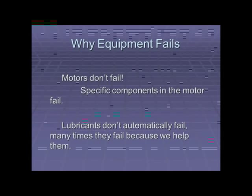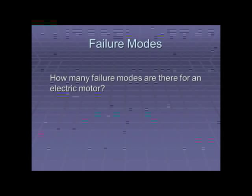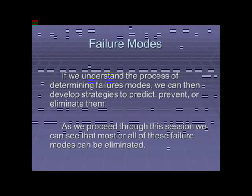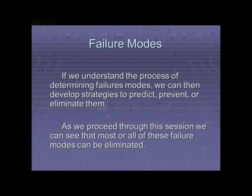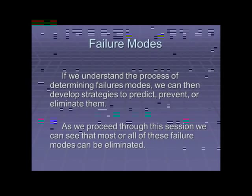The same applies to lubricants — they don't automatically fail. Many times they fail because we help them along with things we do in our plants. There are over 50 failure modes for an electric motor. By breaking down all components and asking how each can fail, we can start eliminating specific failure modes and make our motors last three to eight times longer. If we understand failure modes, we can develop strategies to predict failure using predictive technologies, prevent it using preventive maintenance, or eliminate failures with redesign.